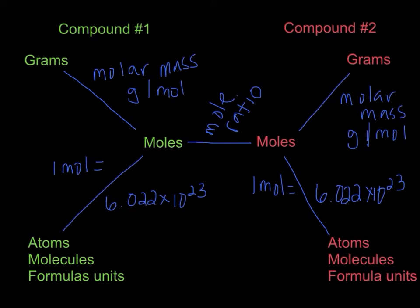Now one other side note: when we're talking about atoms on both sides here, we are talking about individual elements. When we're talking about molecules, we are talking about covalent compounds, so two nonmetals coming together. And for formula units, we are talking about ionic compounds.